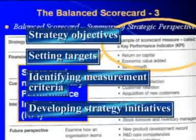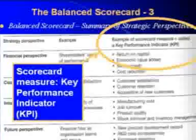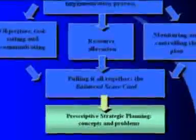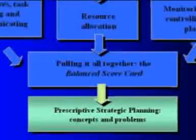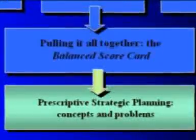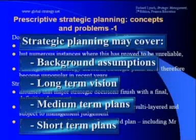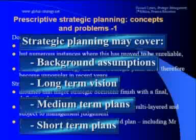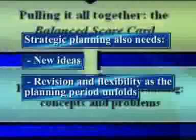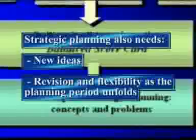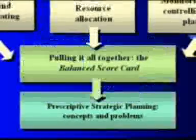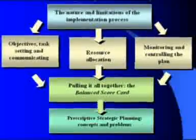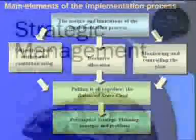More generally, the task of strategic planning is to make the strategy process operational in some organisations, but it is no substitute for basic and innovative strategic thinking. The basic process of strategic planning may well cover such areas as background assumptions, long-term vision, medium-term plans, and short-term plans. Importantly, the input of new ideas and revisions to the process are significant elements of its development. Strategic planning has been criticised heavily by some researchers as being too bureaucratic and rigid, but attitudes towards it are beginning to mellow as long as the process is not too narrowly defined.